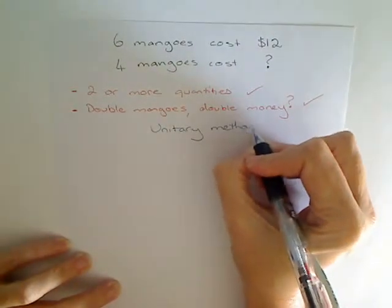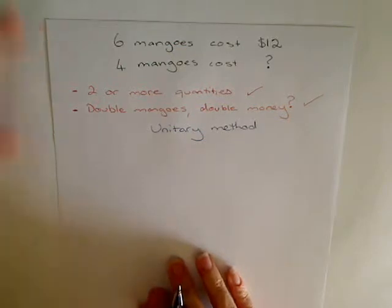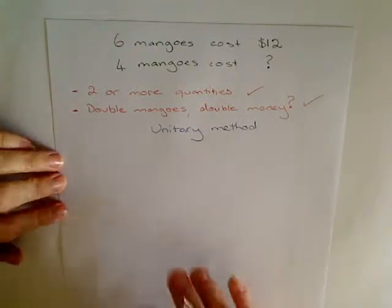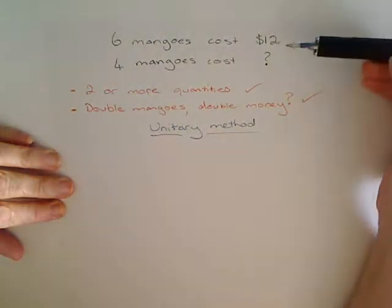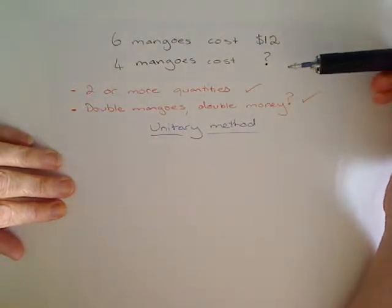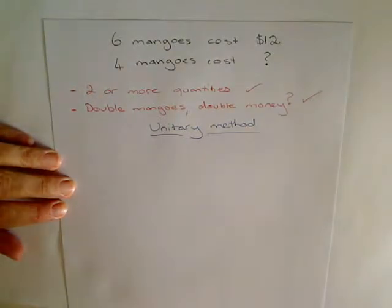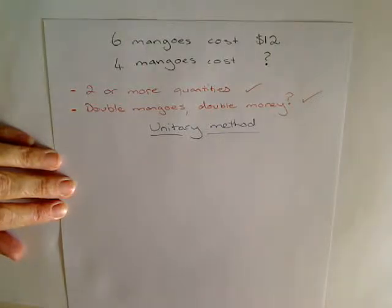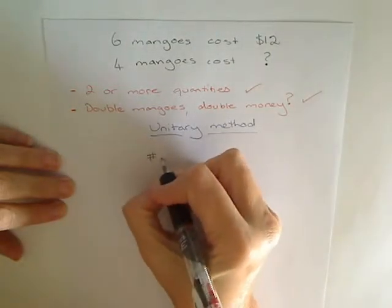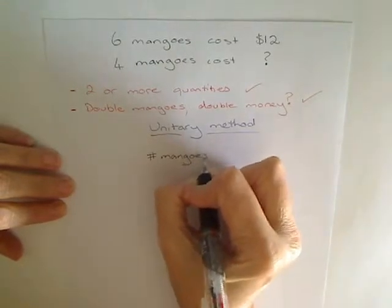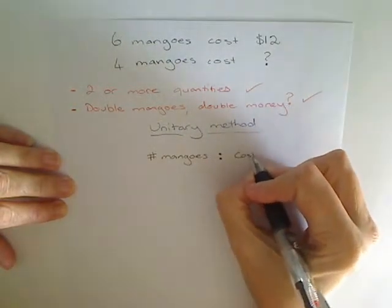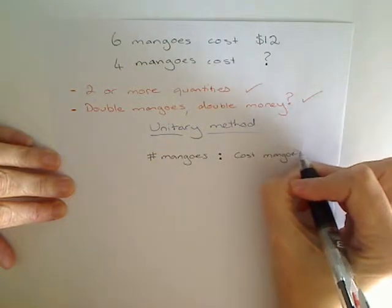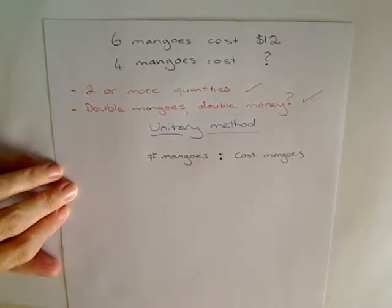You don't have to use the unitary method — there are rates methods, methods using algebra, and so on — but this is a great one for many situations. The unitary method is about finding a unit that takes you from the information you do know to the information you don't know. I strongly recommend writing in words what you're comparing: the number of mangoes, with a ratio sign to show they're in proportion, and the cost of the mangoes.